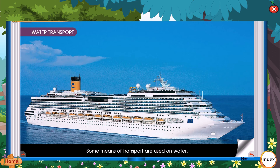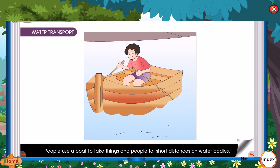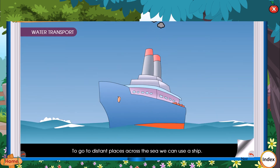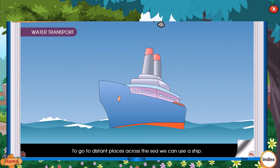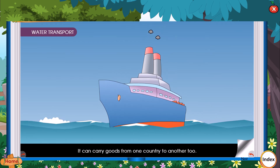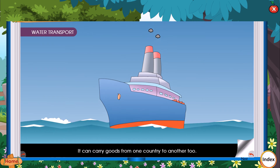Water Transport — some means of transport are used on water. People use a boat to take things and people for short distances on water bodies. To go to distant places across the sea, we can use a ship. It can carry goods from one country to another too.